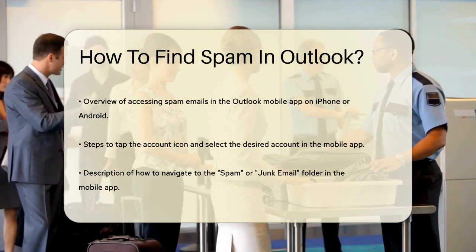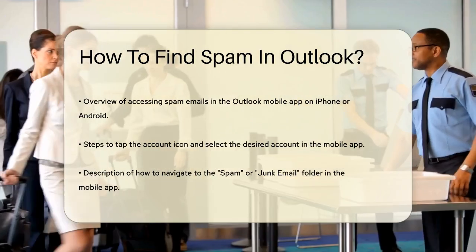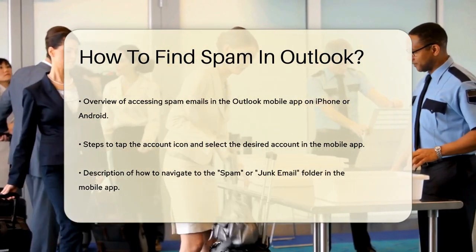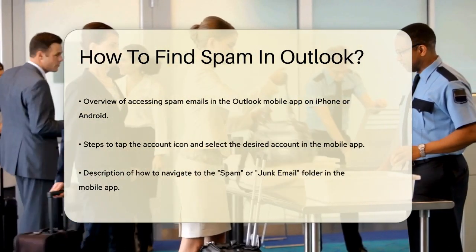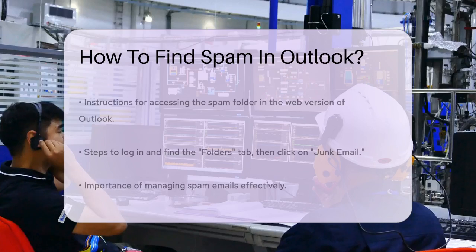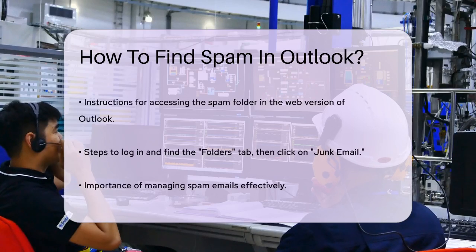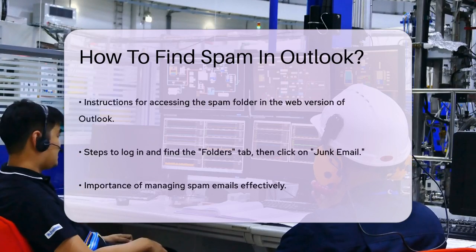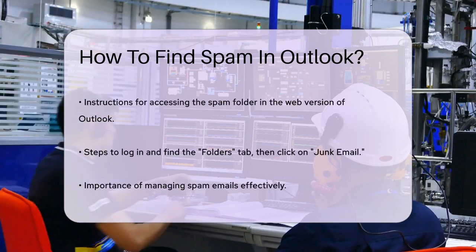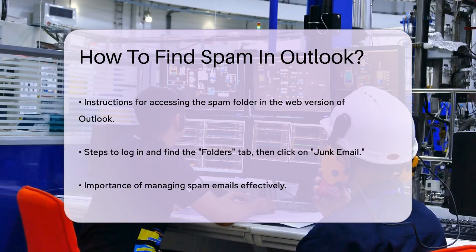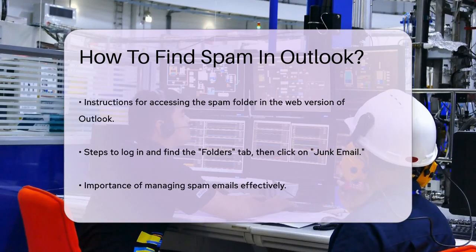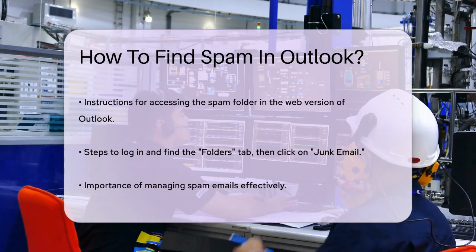For those using the web version of Outlook, finding the spam folder is straightforward. Log in to your Outlook account, go to the Folders tab on the left, and click on Junk Email. Here, you can view and manage all your spam emails.